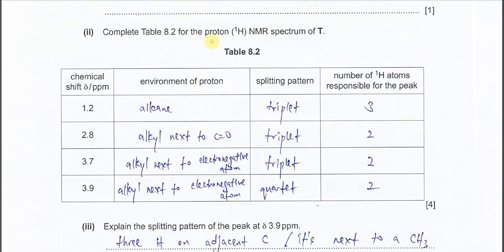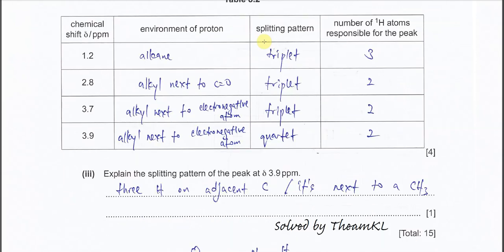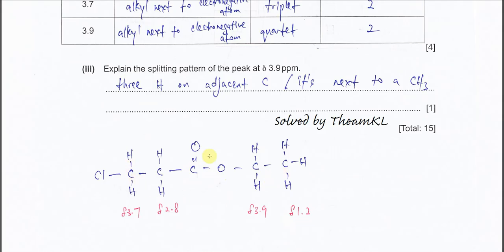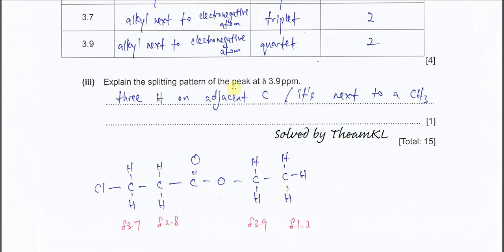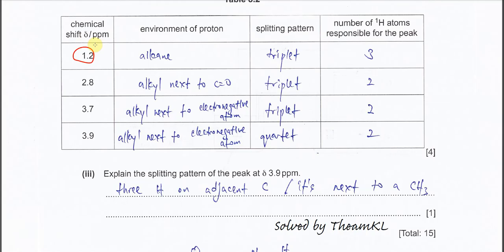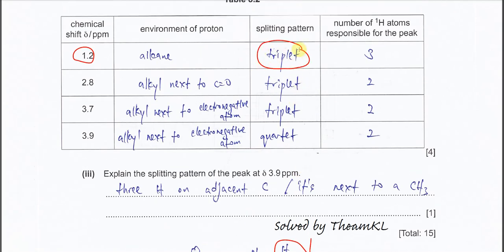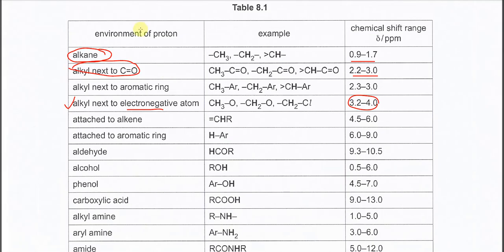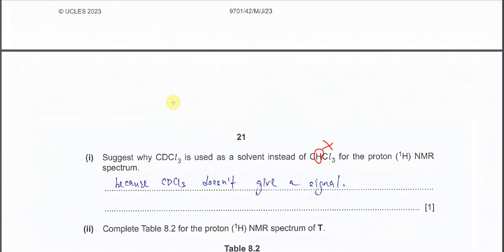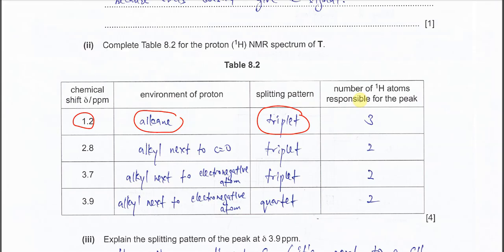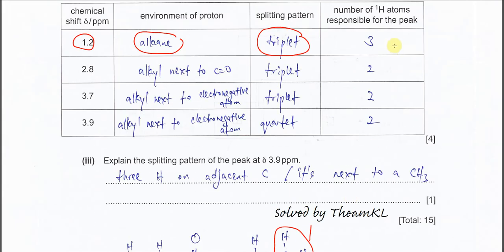Complete table 8.2 for the proton NMR of T. For the signal at chemical shift 1.2 ppm, this corresponds to the CH3 group. It's 1+2 neighbours, so the splitting pattern is a triplet. The environment of the proton is alkane. The number of hydrogen atoms responsible for this peak is three.